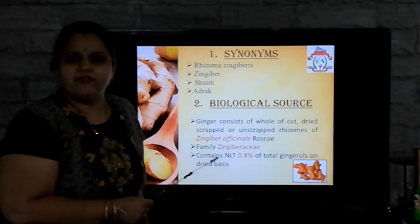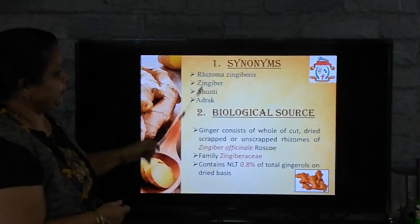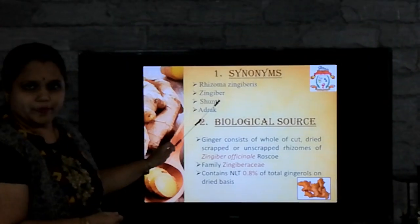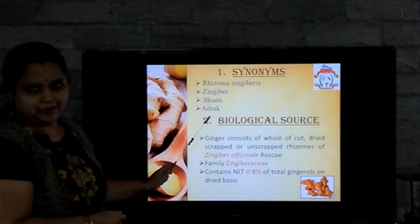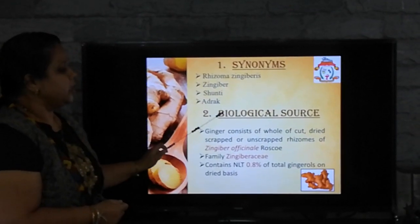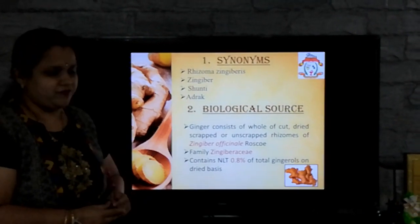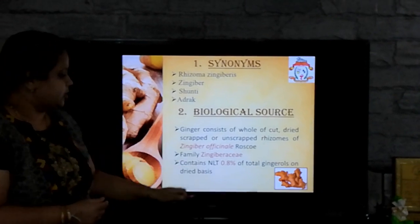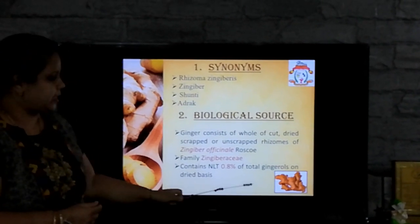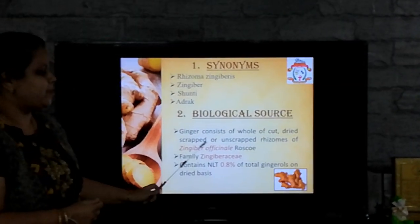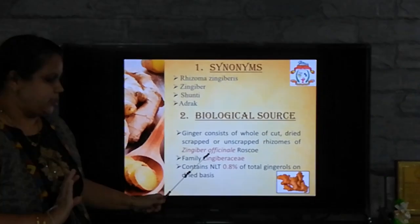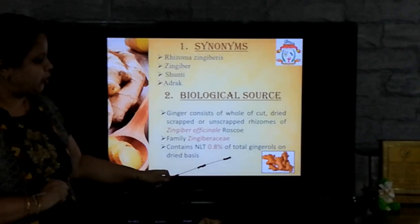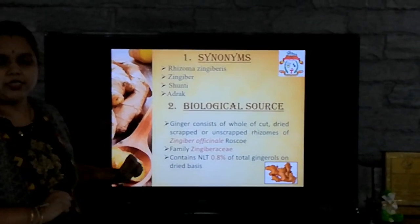To begin with the pharmacognosy of ginger, its synonyms are rhizoma, zingiberus, zingiber, shunti, adhrak and many more. Now, let us know the biological source of ginger. Ginger consists of whole or cut, dried, scrapped and unscrapped rhizomes of Zingiber officinale belonging to family Zingiberaceae, and contains not less than 0.8% of total gingerols on dried basis.